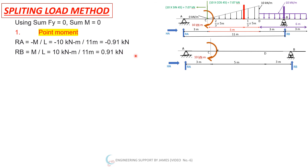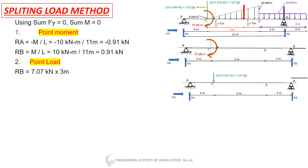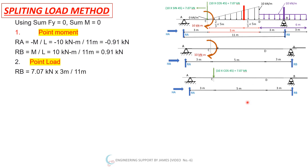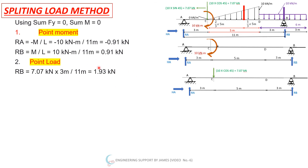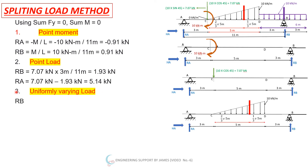For the vertical point load of 7.07 kN, using the splitting method: RB = 7.07 × 3 / 11 = 1.93 kN. RA = total vertical load minus RB = 7.07 − 1.93 = 5.14 kN.